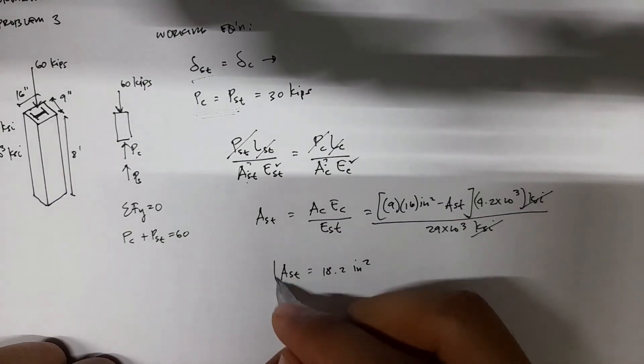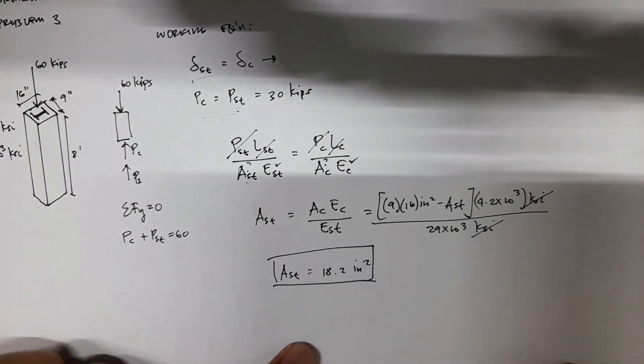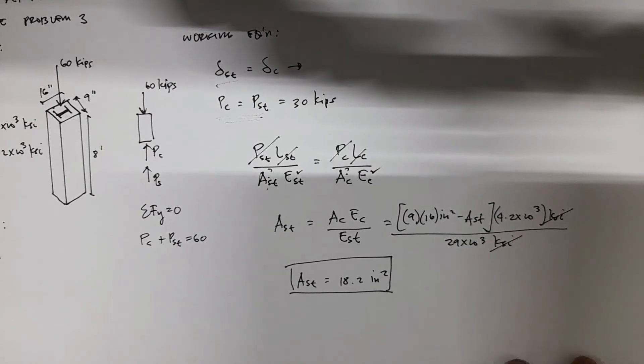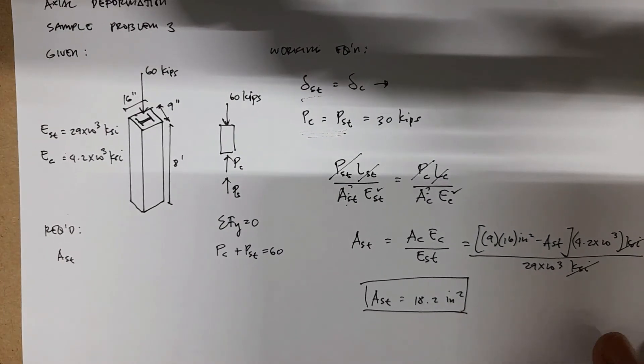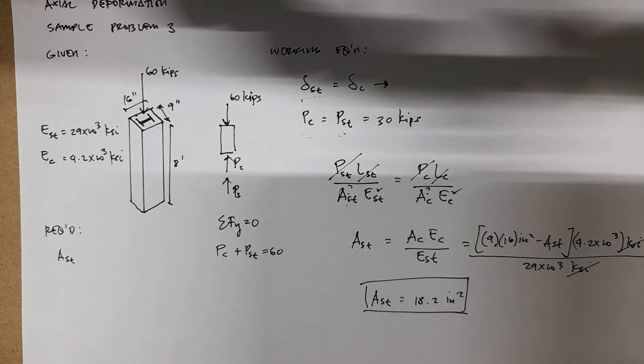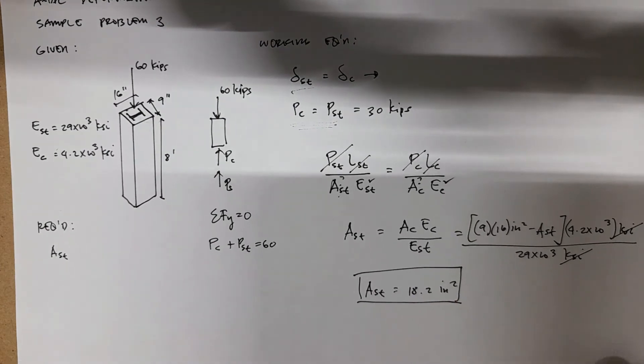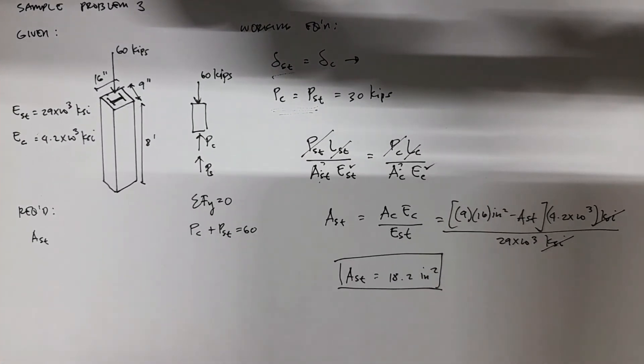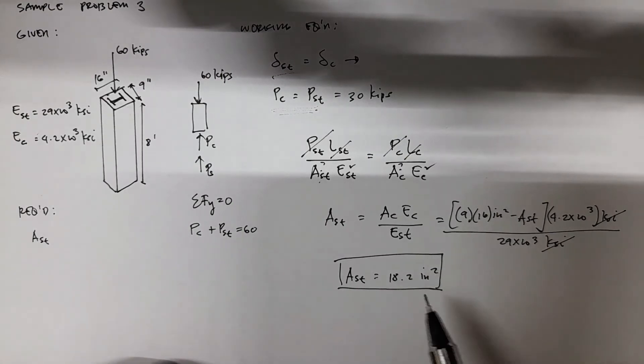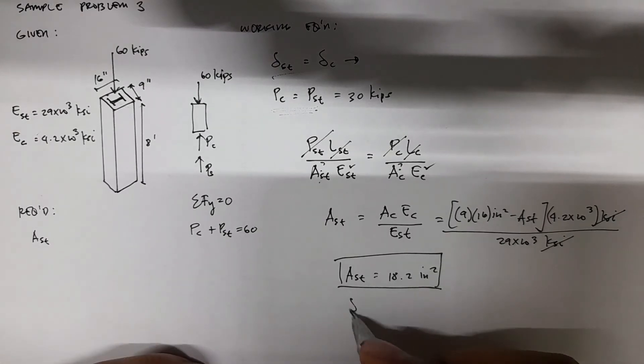That's the area of steel needed so that the vertical loading of 60 kips is equally shared between the two materials. What if you're going to find the deformation of steel?